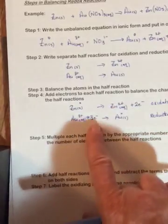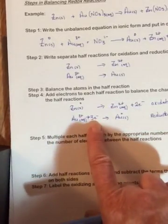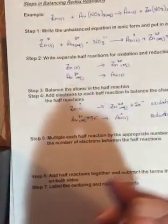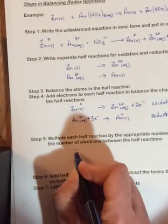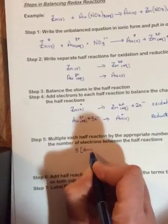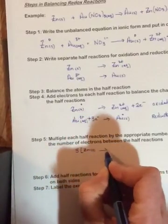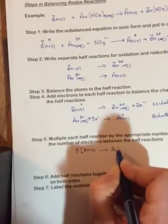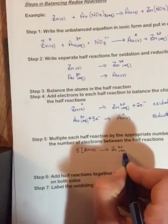So it means I have to multiply one by three—that'll give me six up here. This one by two—that'll give me six. So that when I add them together they'll cancel out. So it'll be three, square bracket, zinc solid going to zinc two positive aqueous plus two electrons.